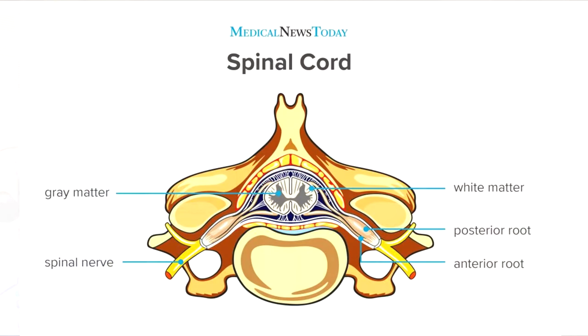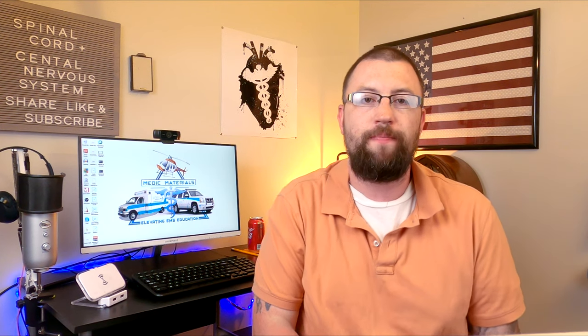Third is the spinal ganglion, which is a cluster of nerve bodies that contains the sensory neurons. And finally, we have the spinal nerves. There are 31 pairs of spinal nerves and they control the sensation as well as some movement to the body. We will cover the spinal nerves in more depth in a future video on this channel as they are really a part of the peripheral nervous system.